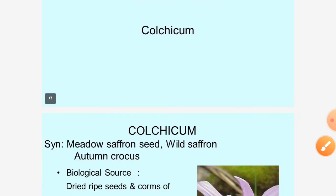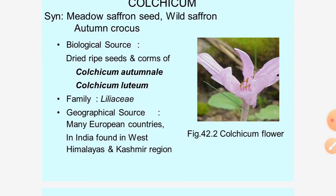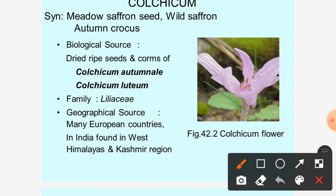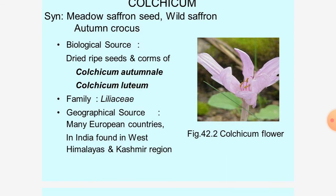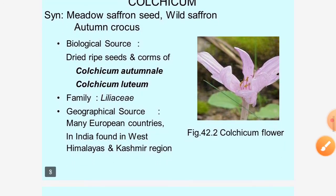The last drug is Colchicum. Its synonyms are Meadow Saffron seed, Wild Saffron, and Autumn Crocus. The biological source is the dried seeds and corms — underground storage structures — of the plant Colchicum autumnale. The family is Liliaceae. It is majorly found in European countries and in India in the West Himalaya and Kashmir region.